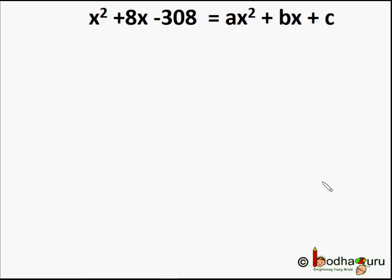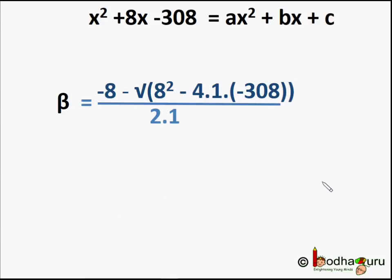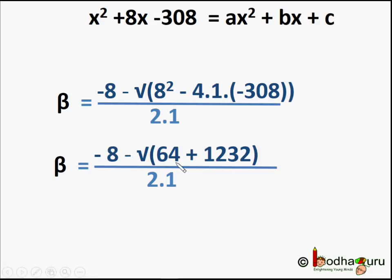Let's find the second root. We put the value of a, b, c in the formula, so we get beta = (-8 - √(8² - 4·1·(-308))) / (2·1). On simplification we get (-8 - 36) / 2 = -22.